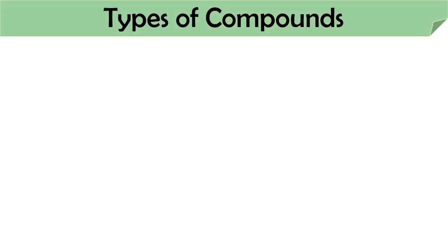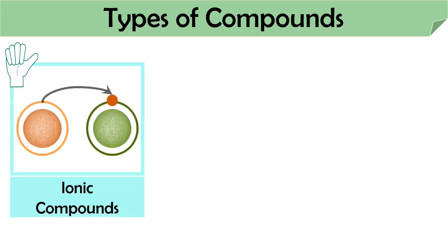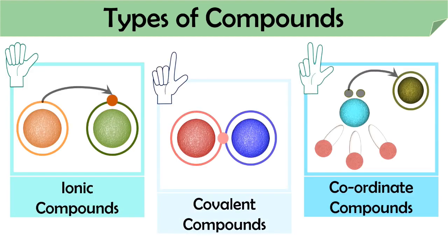Broadly, we can categorize compounds into three main types: ionic compounds, covalent compounds, and coordinate compounds. Ionic compounds are formed by give and take of electrons between atoms — examples include sodium chloride and copper sulfate. Covalent compounds are formed by mutual sharing of electrons between two atoms; methane and ammonia are common examples. The third type, coordinate compounds, are formed by chemical interaction between the central metal ion and an array of ligands.